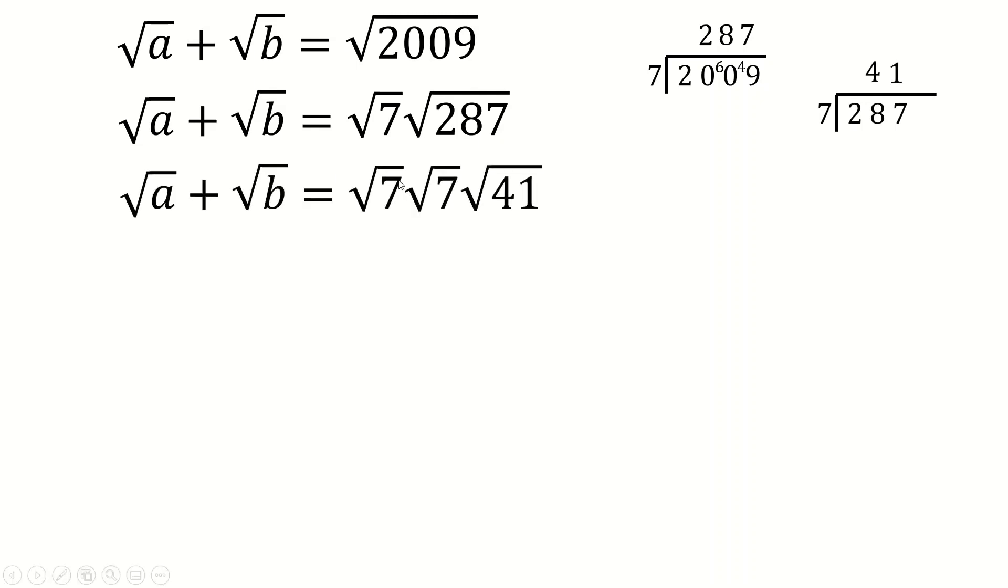And very quickly you realize that it is. So this is root 7, root 7, root 41. But root 7 times root 7 is 7. So this is 7 root 41. And 41 is prime. I just know that that's prime.